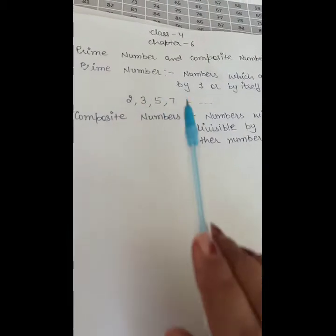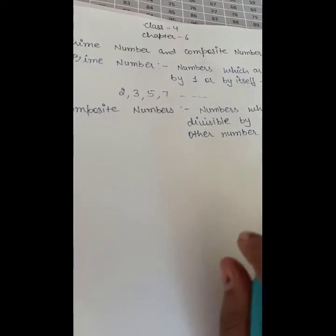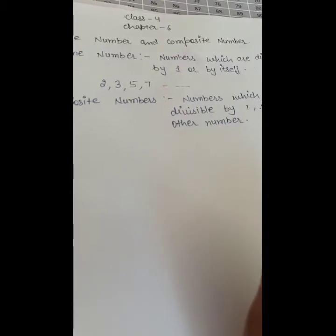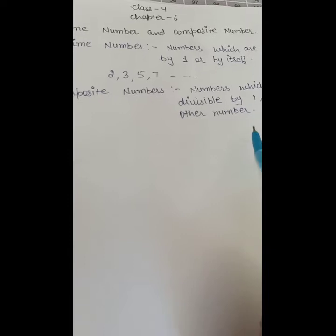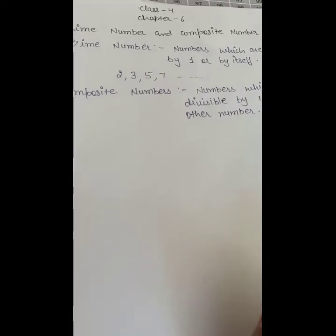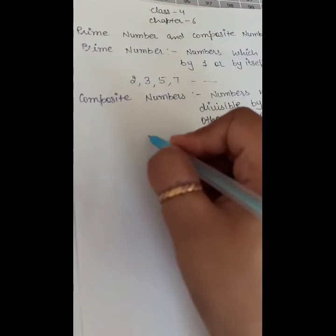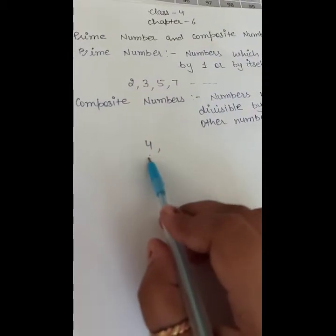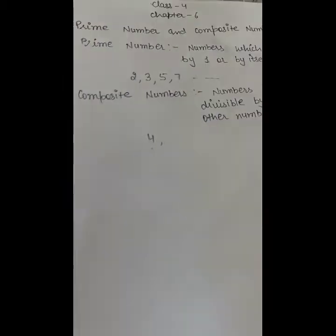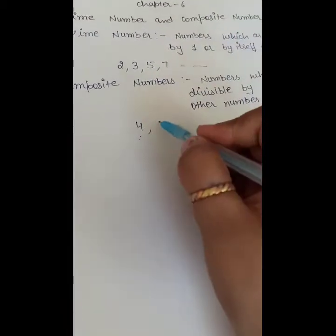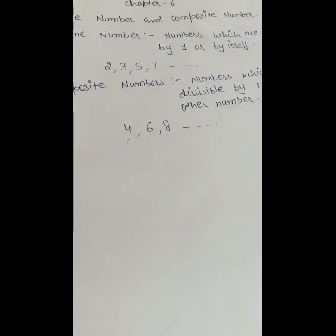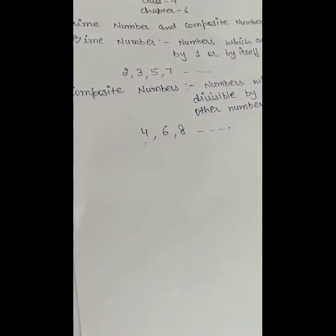Prime numbers are the numbers which are divisible by only one and itself. But composite numbers are the numbers which are divisible by one, itself, and another number — like four. Four is divided by one, divided by two, and divided by four. Six, eight and so on are the composite numbers.